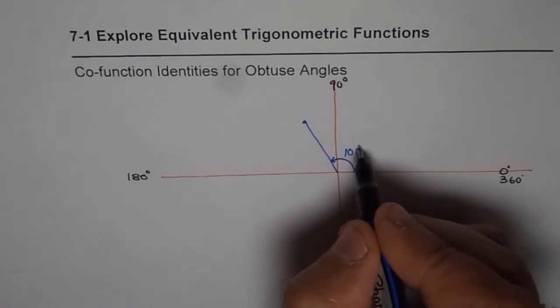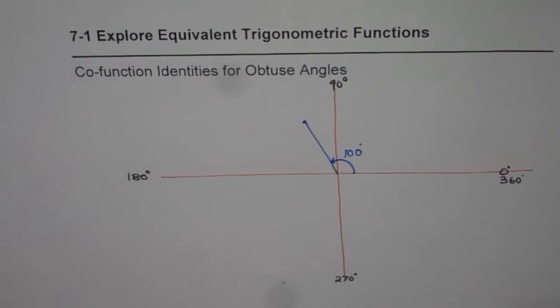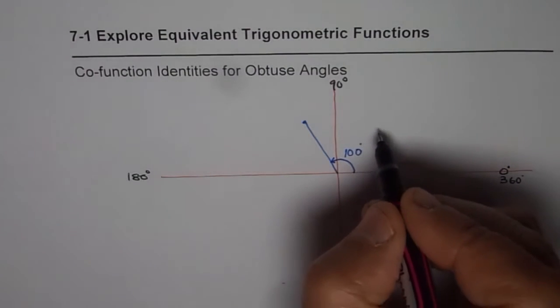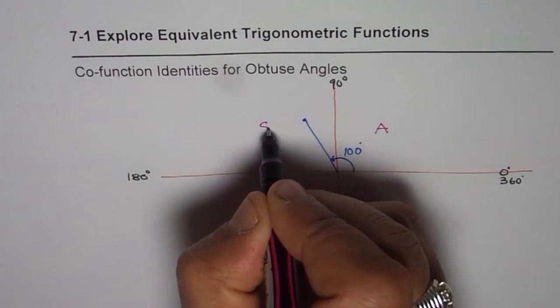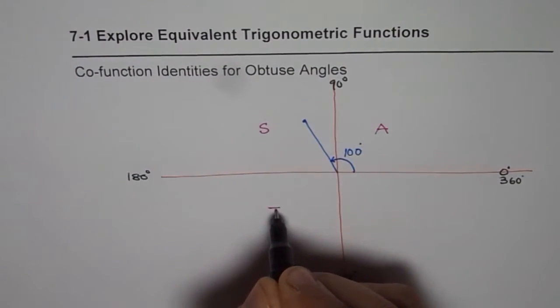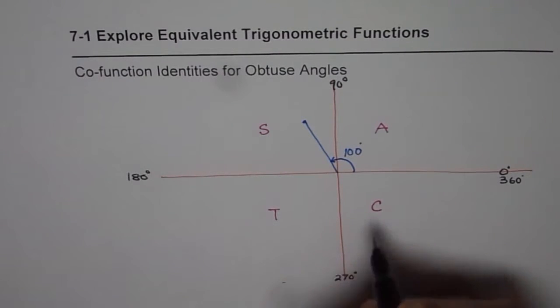Now, for an angle of 100 degrees, we'll find co-function identities. One more thing before we get into, we know in this quadrant, all are positive. In this quadrant, sine is positive. In this quadrant, tan is positive. And in quadrant 4, we have cosine is positive.